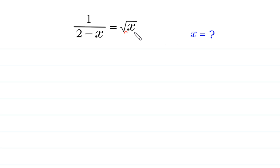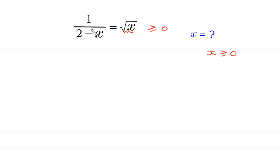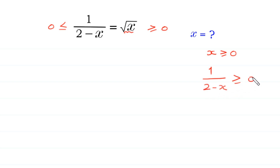Since x is under a radical sign, x must be greater than or equal to 0. Because the right side is greater than or equal to 0, the left side expression 1 over 2 minus x must also be greater than or equal to 0. We use these two conditions to check the solutions of this equation.